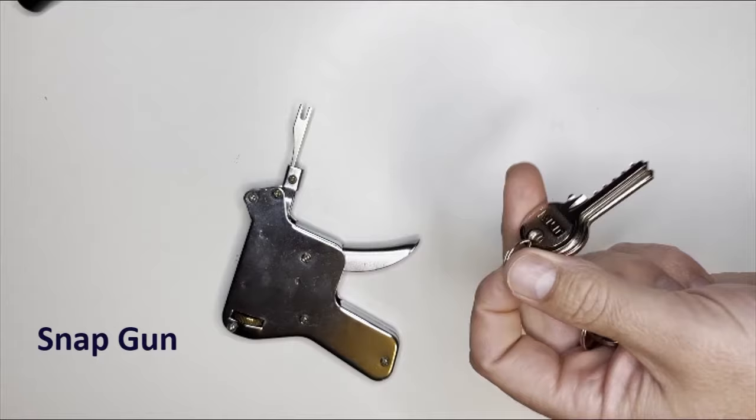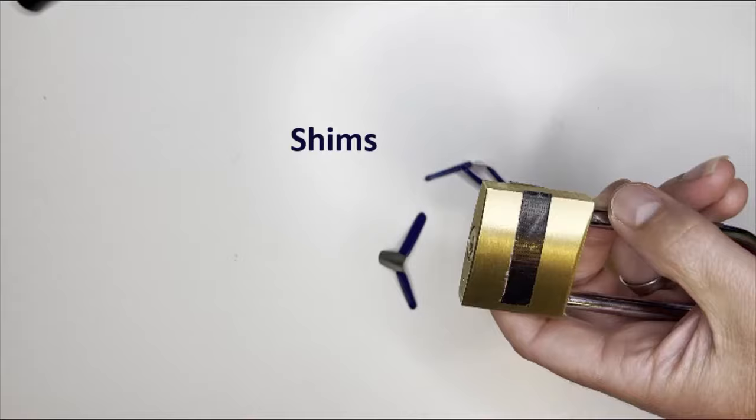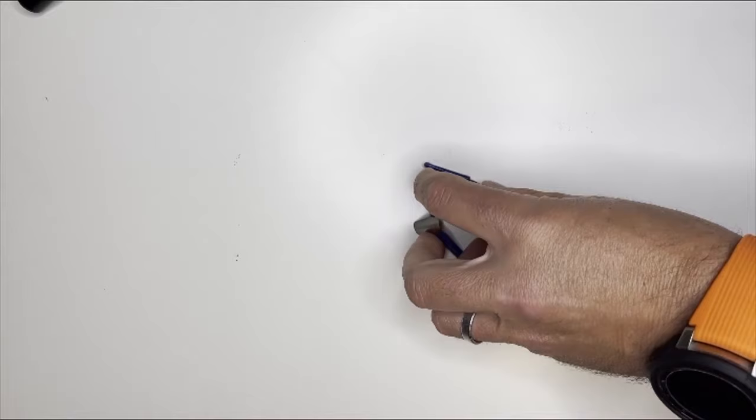Some more tools that we always carry with us are shims. If you've got a padlock, for example, and you want to use something other than a lock pick, you've had no success, there's a potential that you can actually shim a lock. This particular padlock here's got a long high shackle and it doesn't have any protective shield, so therefore this is potentially vulnerable to a shim attack.